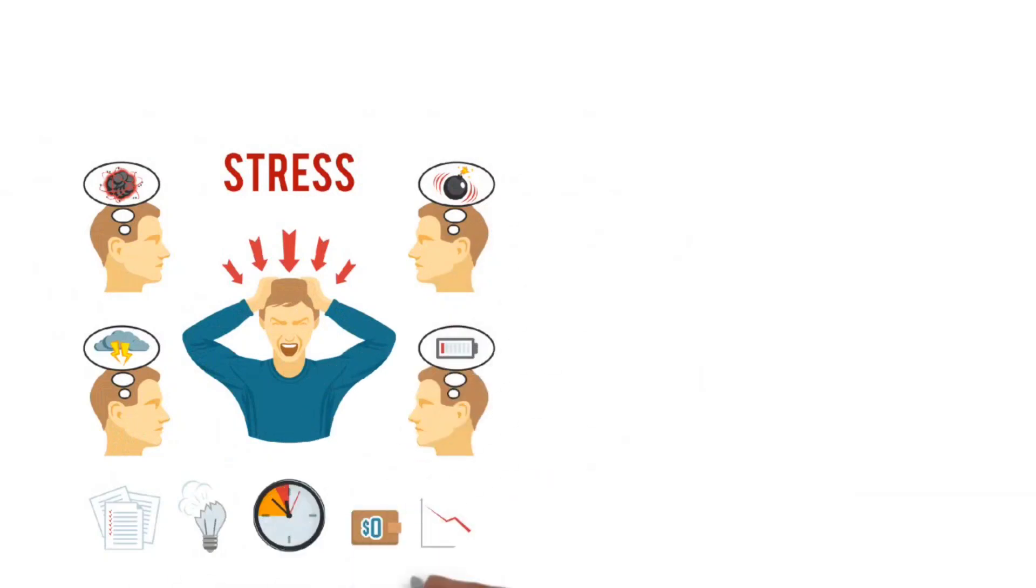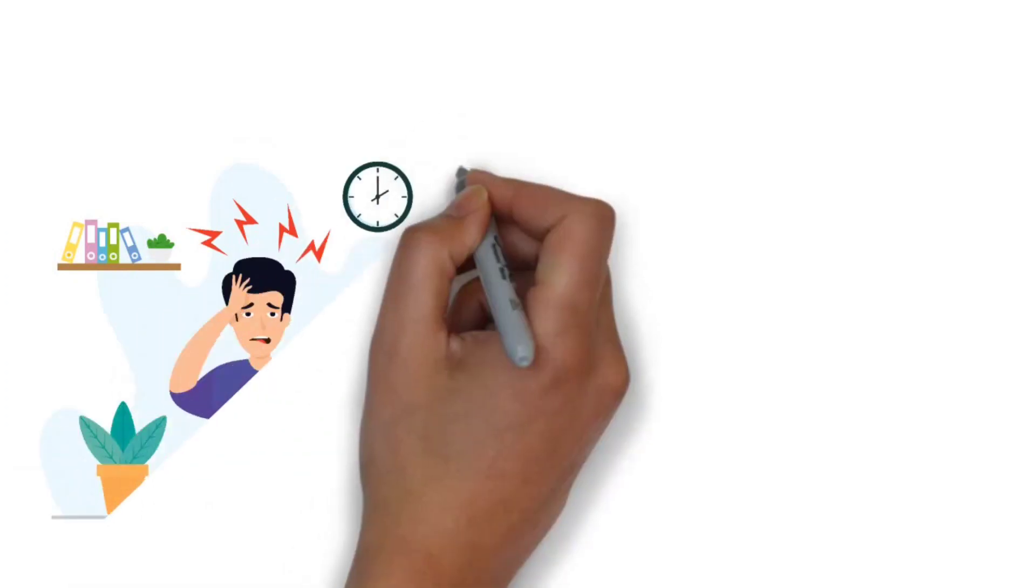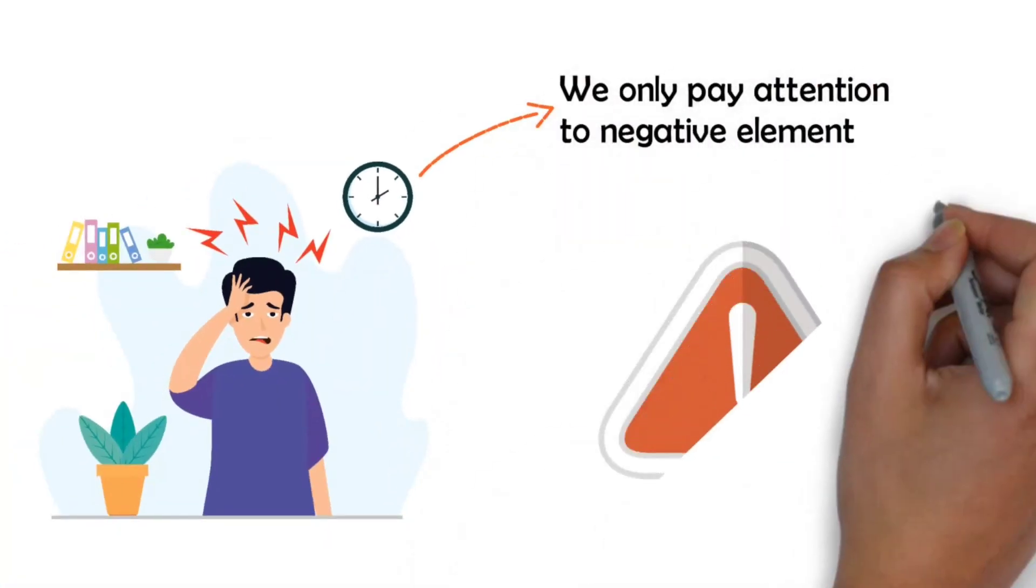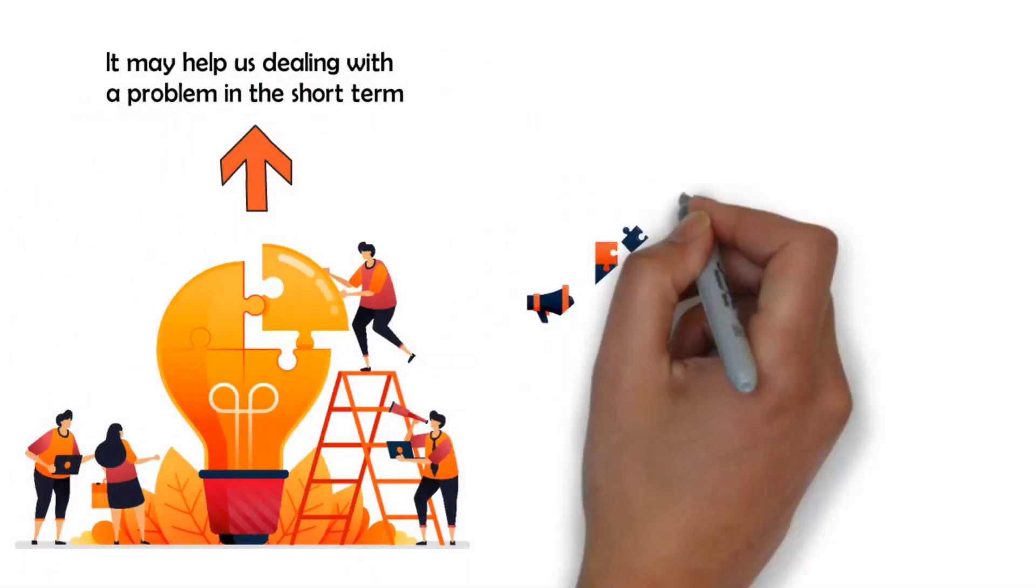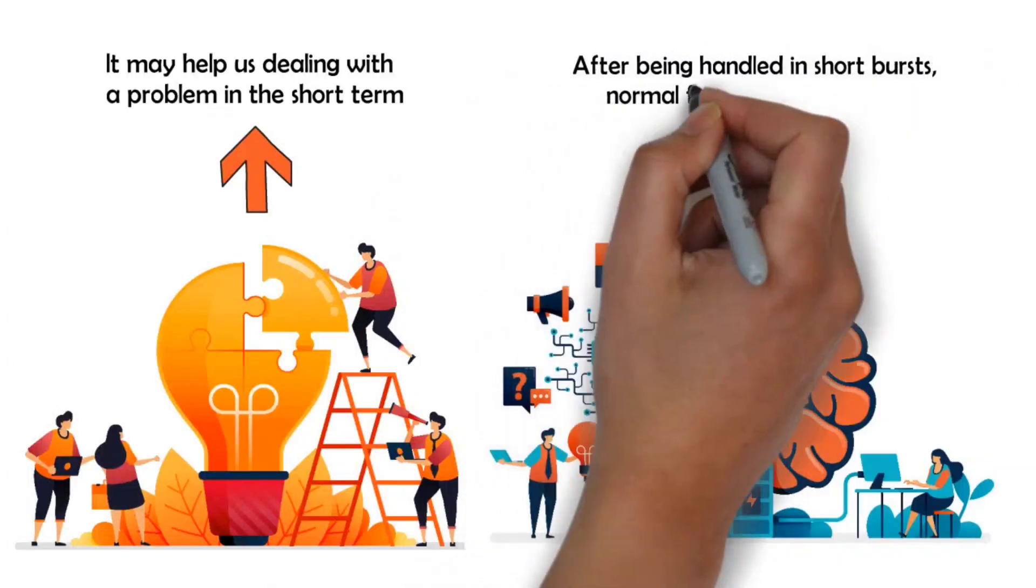Burnout and chronic stress may interfere with your ability to pay attention or concentrate. When we are stressed, our attention narrows to focus on the negative element that we perceive as a threat. In the short term, this helps us deal with the problem at hand, but our bodies and brains are designed to handle this in short bursts and then return to normal functioning.